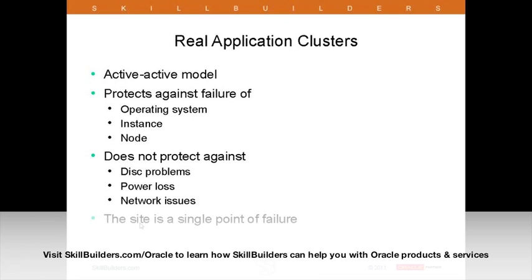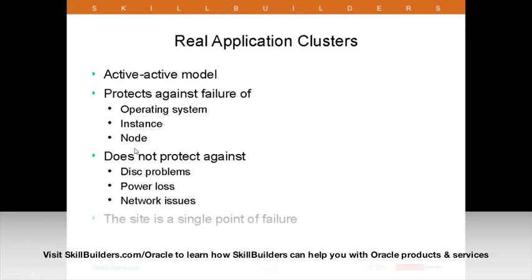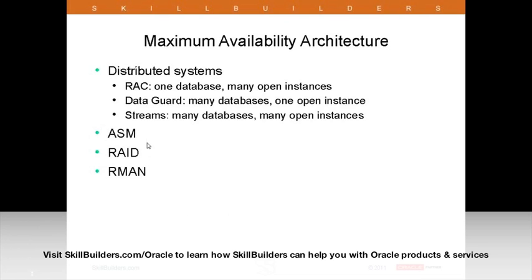Losing a site happens more often than one might think. I was hearing on the news this morning about an earthquake in America last night — I was wondering if that brought down any data centers. An earthquake is the most dramatic point of site failure, but there are also diggers cutting through cables. RAC doesn't protect you against that. We have a quick question: does GoldenGate fit into the picture? Yes it does — I'll deal with GoldenGate after I've been through RAC and DataGuard. Thanks for reminding me — I'll talk about it a bit longer than intended.